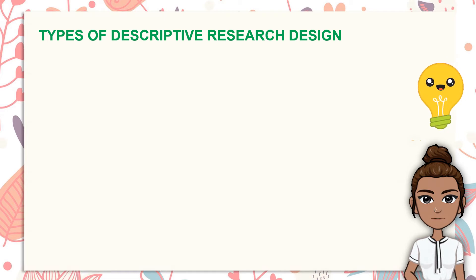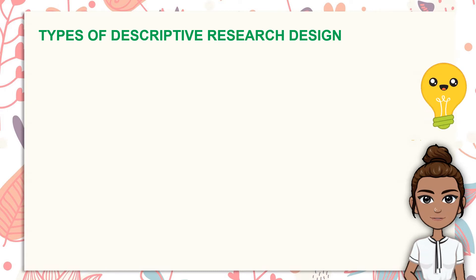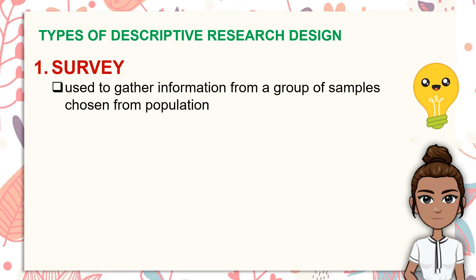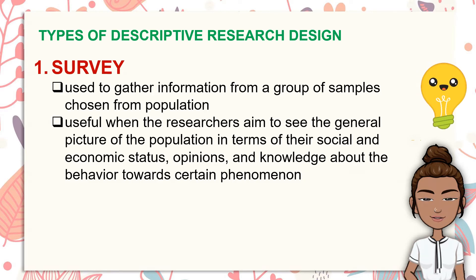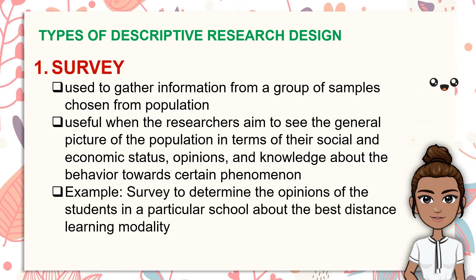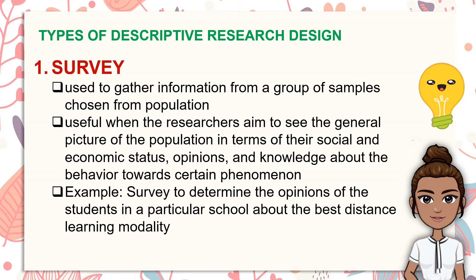Let's move on to the types of descriptive research design, according to Faltado et al. 2017 and Mariano. First is survey. This design is used to gather information from a group of samples chosen from a population. It is useful when researchers aim to see the general picture of the population in terms of their social and economic status, opinions, and knowledge about behavior towards certain phenomena. When conducting a survey study, it is important that the people questioned are randomly sampled because it gives more accurate findings across a greater range of respondents.